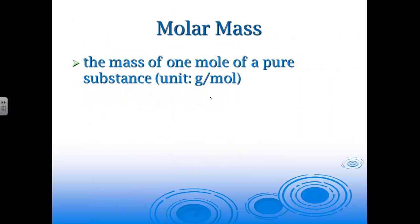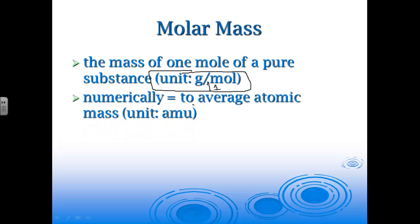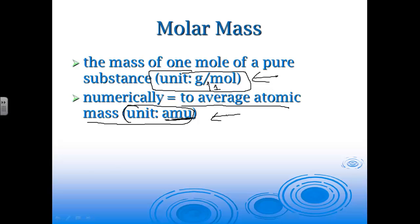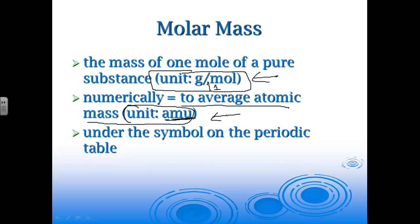The only other new conversion factor we're going to add is molar mass. Molar mass is the mass of one mole of a pure substance, and the unit is grams per mole — always grams per one mole. Every conversion factor in this section, the mole is always going to have a 1. Numerically, molar mass equals the average atomic mass; the only difference is the unit. Average atomic mass uses AMU; molar mass uses grams per mole.